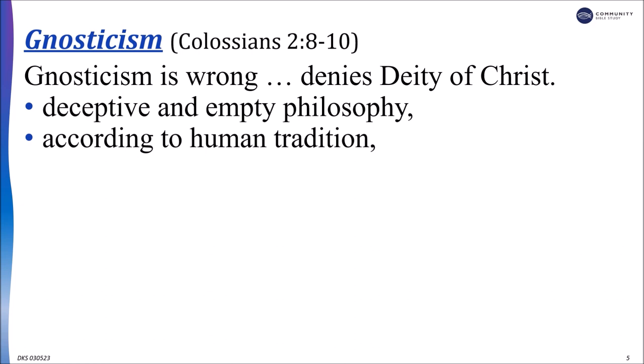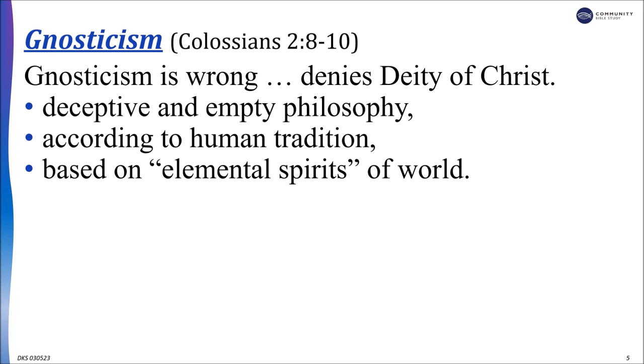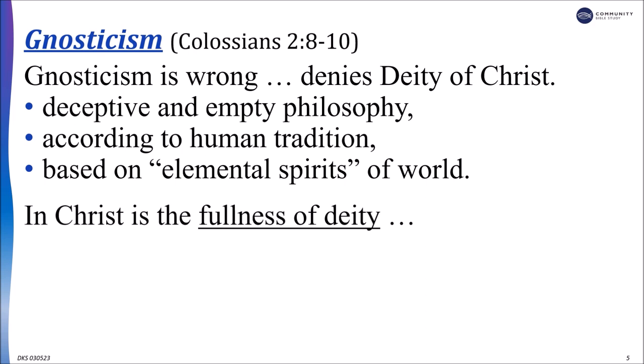All these false and wrong ideas are based on the elemental spirits of the world — a term we don't use or hear very often, but the biggest clue that it means something wrong and false is that they are of the world; they are not from God above. James 1:17 tells us only the good stuff comes from God, saying: 'Every good gift and every perfect gift is from above, coming down from the Father of lights, with whom there is no variation or shadow due to change.' There is no shadow with God because he is the immutable, fixed light source who is pleased to dwell in the fullness of his deity in Christ Jesus.